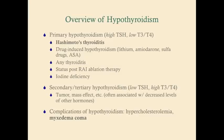Secondary and tertiary hypothyroidism — remember, you'll have a low TSH and a low T3 and T4, and that could be due to tumor mass effect and so forth. Often it's associated with decreased levels of other hormones too. So if you have a tumor, it's often not just going to affect thyroid hormone alone — it's going to affect luteinizing hormone, follicle-stimulating hormone, ACTH, and so forth.